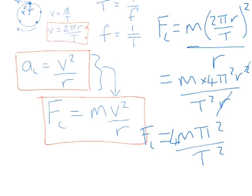And sometimes you see that in different forms, 4π²mr over T². But that's just another useful formula for us. We could also look at the acceleration as just 4π²r over T².